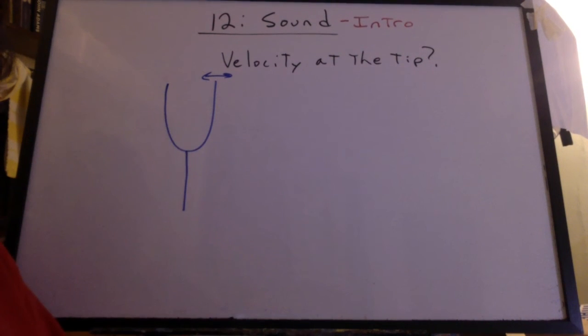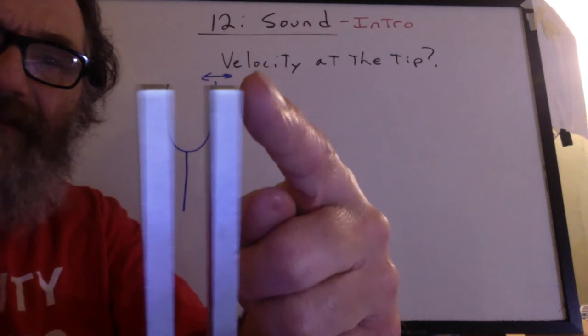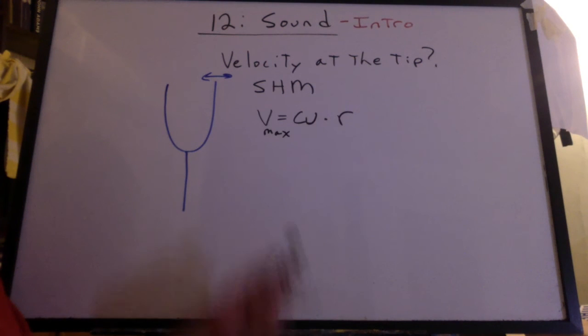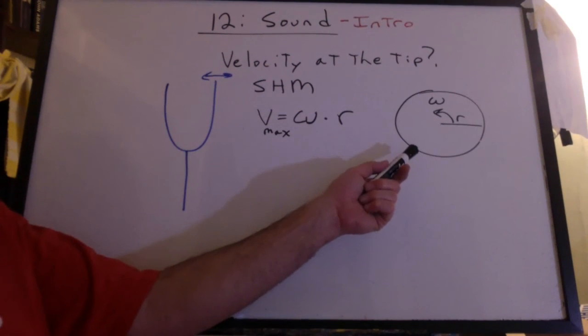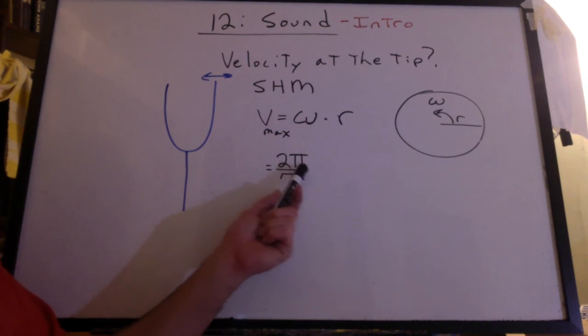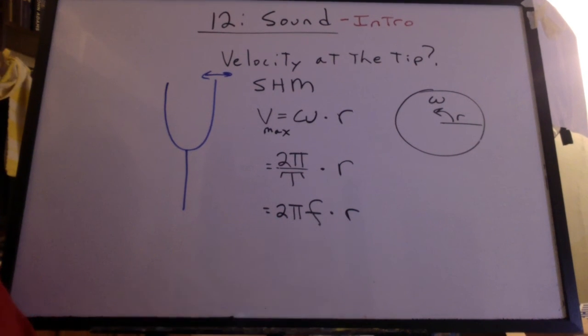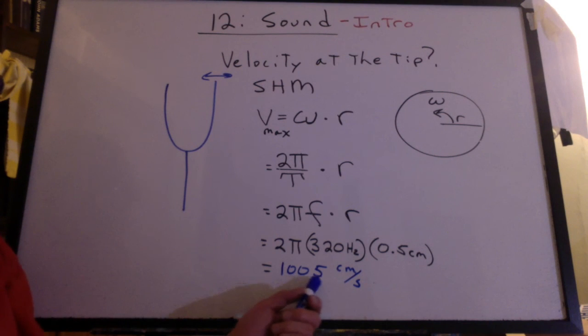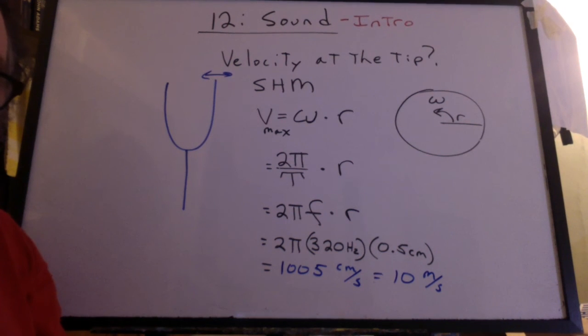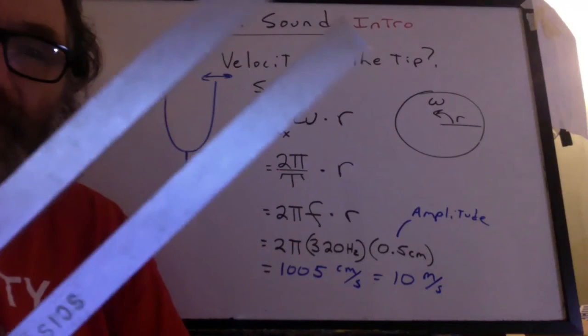So just how fast is the tip of the tuning fork moving? This one has a frequency of 320 hertz. It might be hard to tell, but we have an amplitude of about half a centimeter. It's all simple harmonic motion. You might remember that the maximum velocity occurs at the equilibrium position in simple harmonic motion, and it can be found from taking the angular velocity times the radius, which is the amplitude of the motion. Remember, it's all based on a component of circular motion. Do you remember that omega is 2π over the period? The radius is the amplitude. One over the period is frequency. So if I plug in 2π, 320 hertz, and a half a centimeter for an amplitude, wow, that's 1,005 centimeters per second. That's about 10 meters per second. Obviously, as the amplitude dies down, that number's going to be a little smaller. It sure is interesting to think that this is moving on the order of meters per second.